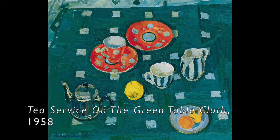Maya Kopitseva was born in 1924 in Abkhazia. Abkhazia is an area near Russia. She was famous for her brightly colored still lifes of everyday items that could be found around the house, such as fruits, vegetables, plates, and cups.